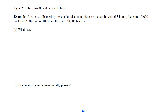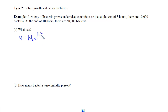Our second type of problem is to solve growth and decay problems. For example, let's say we have a colony of bacteria growing under ideal conditions. At the end of 8 hours there are 10,000 bacteria, and at the end of 10 hours there are 50,000 bacteria. Again, this satisfies the law of exponential change, so the number of bacteria at any time will be the initial number times e to the kt. The unknowns are how many bacteria we started with and what the growth rate k, the constant of proportionality, is.